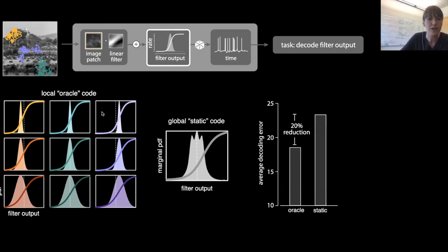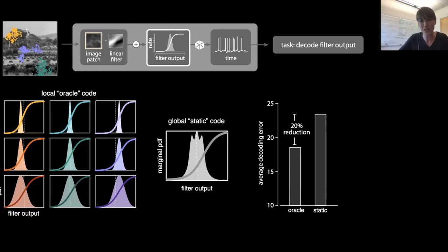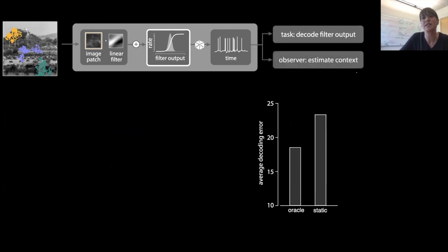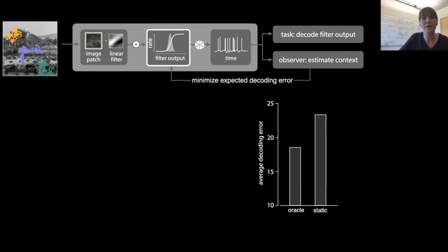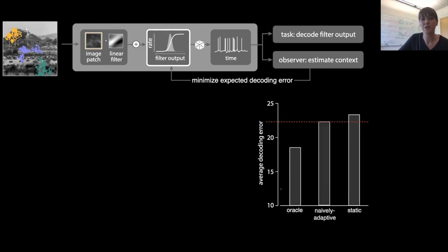There is a problem in this logic: the oracle code requires the system to already know the underlying statistical context. In any naturalistic scenario, the neuron must estimate that statistical context from the same stream of incoming sensory signals it is trying to decode. We can treat this more realistic setting by building an ideal observer model that constructs an estimate of the underlying context from the model neuron's output and uses this context estimate to adapt the nonlinearity to minimize expected decoding error.